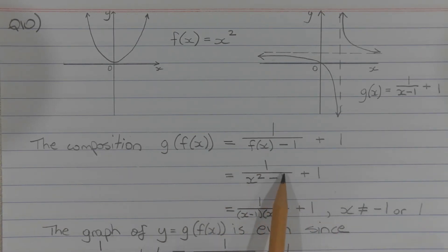We have a difference of two squares here, which can be factorized. So g of f of x is equal to 1 over (x minus 1) times (x plus 1) plus 1, where x cannot equal negative 1 or 1, or else we'll have a division by 0.